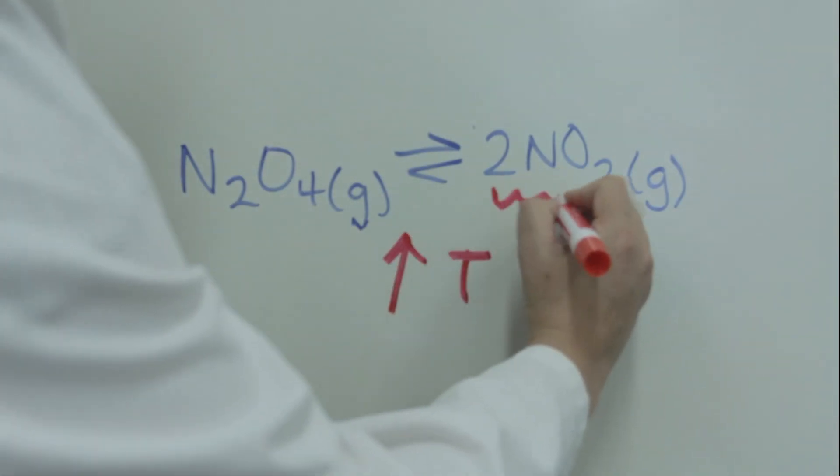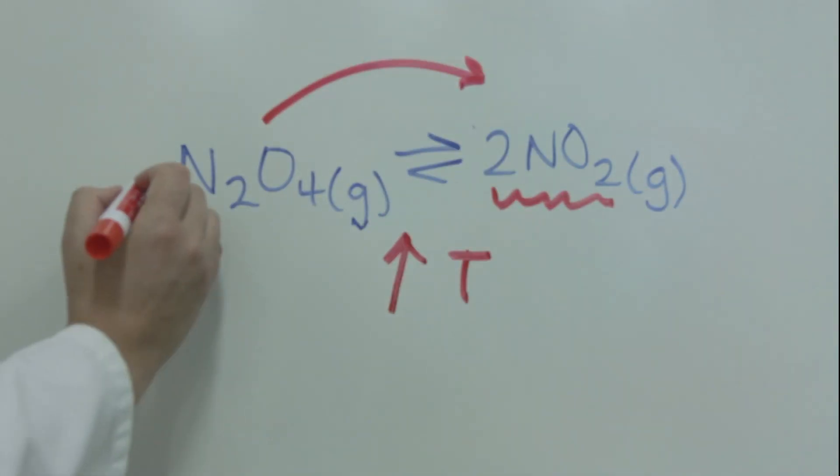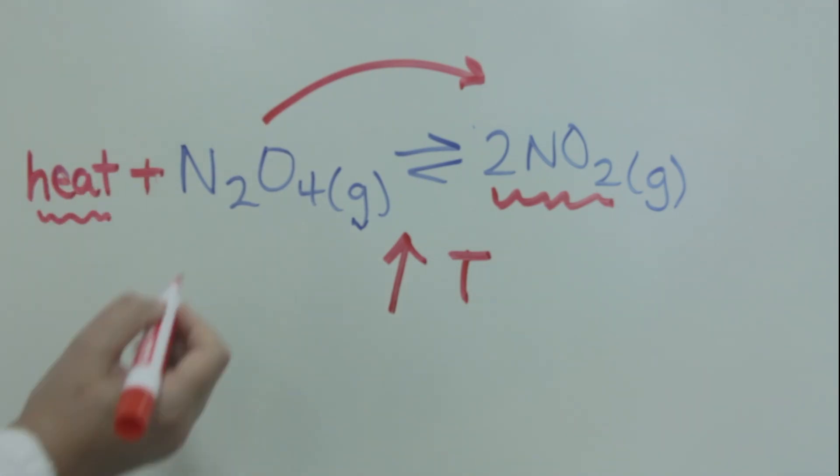As observed by the increased intensity of the brown, increasing the temperature shifted the equilibrium to the right. This means that heat is a reactant and the equilibrium was shifting to the right in order to use up the excess heat.